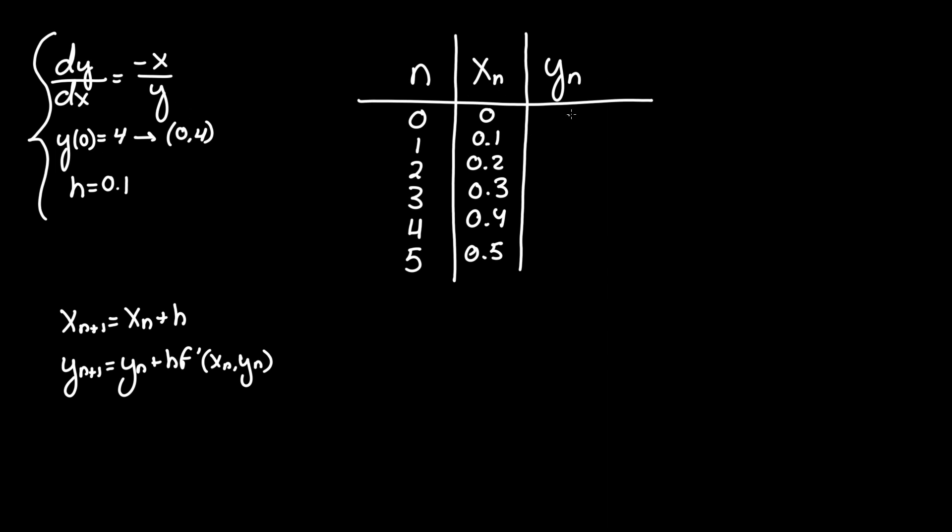We do know the first value of the iteration of zero comma four: it starts off at four. Now using this formula we have to take the previous value y of n, where now n is zero so four, plus h the step size of 0.1 times f prime of x n comma y n, where dy/dx is negative x over y, negative x of n, x of zero rather, is zero.